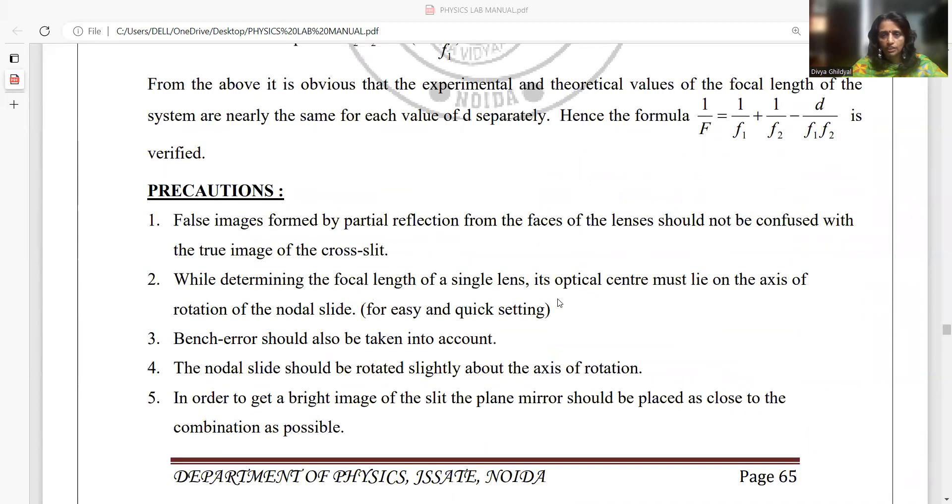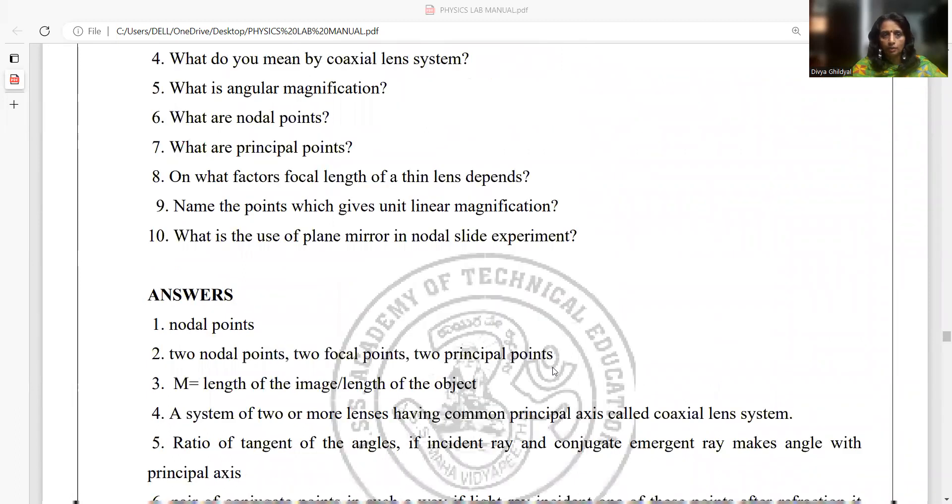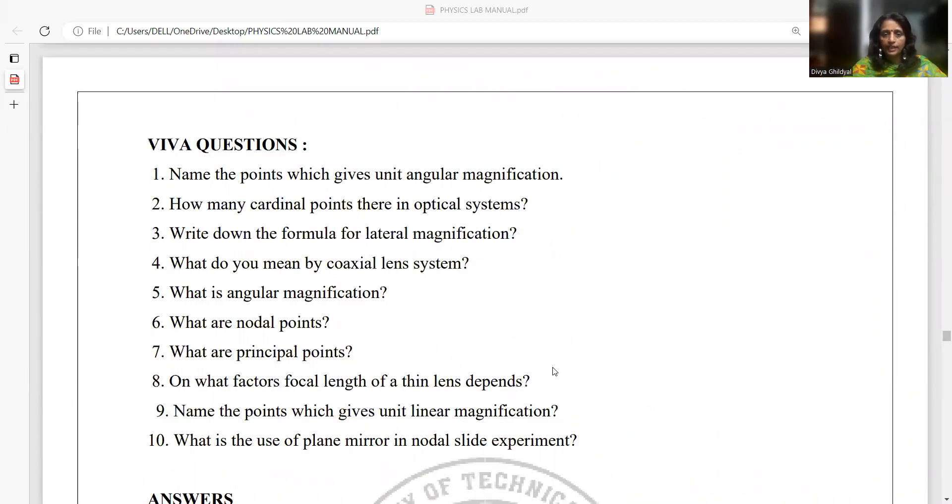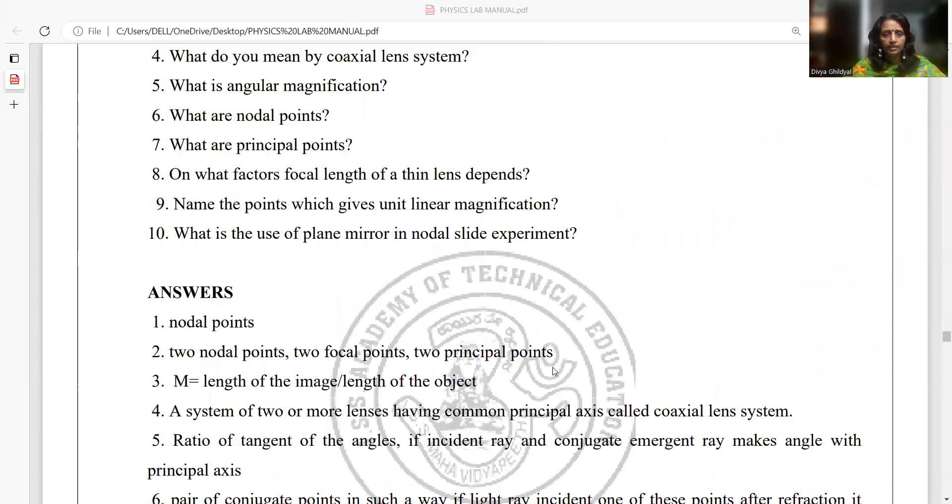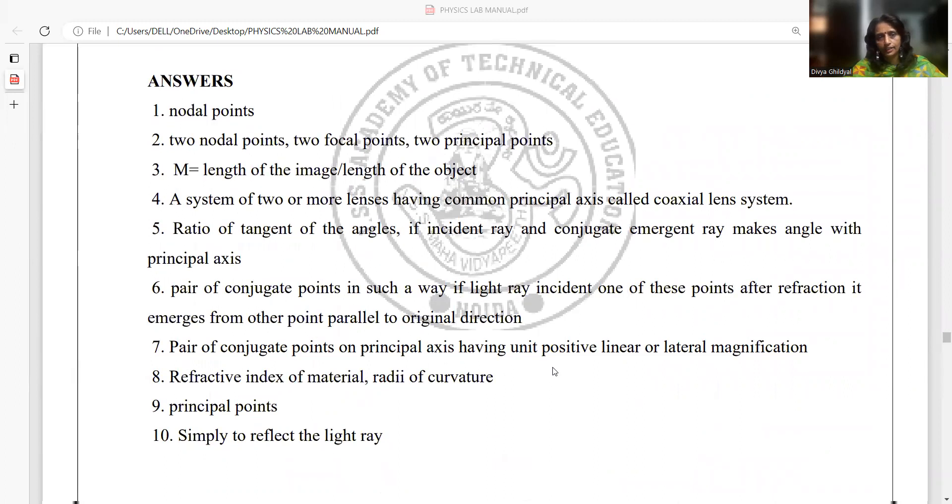The biggest precaution in this experiment is that bench error should also be taken into account. Nodal slides should be fixed properly, and focusing should be done for the most sharp or bright image. Magnification is usually ratio of image distance upon object distance. There are six cardinal points in the system: two nodal points, two focal points, and two principal points. Convex lens has a positive focal length, concave lens has negative focal length.